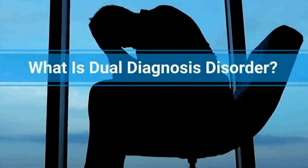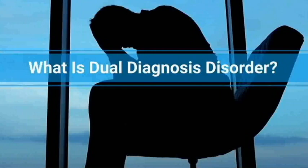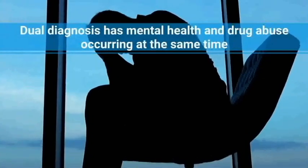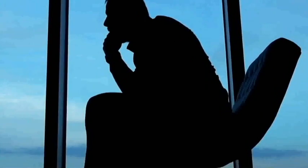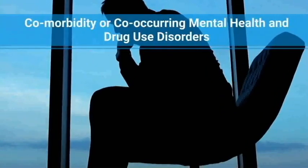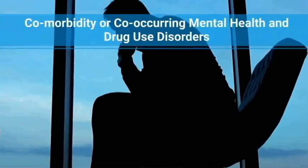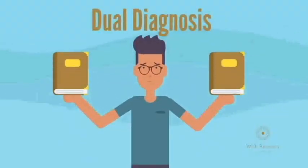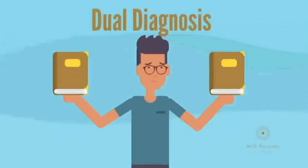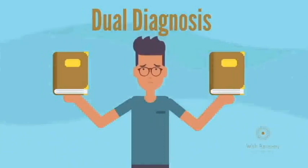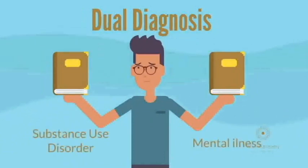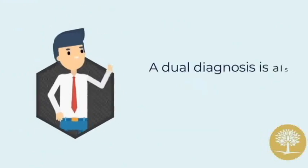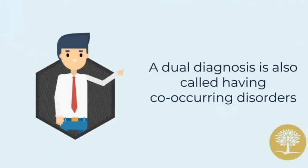What is dual diagnosis disorder? An individual with a dual diagnosis has mental health and drug abuse occurring at the same time. It's also known as co-morbidity, or co-occurring mental health and drug use disorders. Dual diagnosis isn't itself a diagnosis, but it's a term that describes co-occurring conditions of a substance use disorder and mental illness. It is also called having co-occurring disorders.